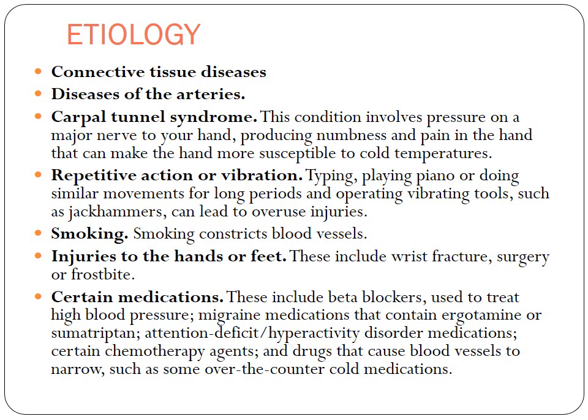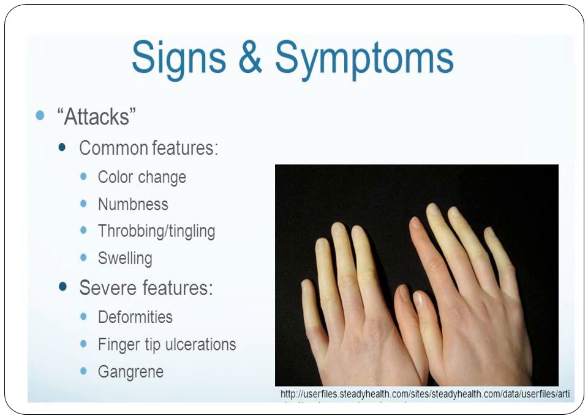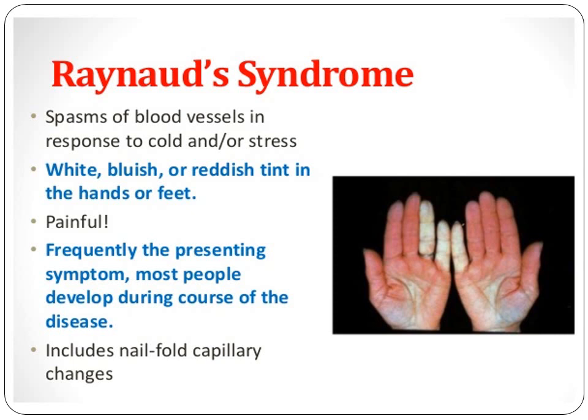Other causes include smoking, injuries to the hands and feet, and certain medications. The signs and symptoms include colour change, numbness, tingling, and swelling. Severe features include deformities — changes to the shape and structure — as well as fingertip ulcers and wounds that can eventually lead to tissue death when there is no circulation or oxygen supply, which can lead to gangrene. This is a classic Raynaud's disease picture: you can see a white, blueish, or reddish tint in the hands and feet. It can be very painful and symptoms frequently develop gradually during the course of the disease.